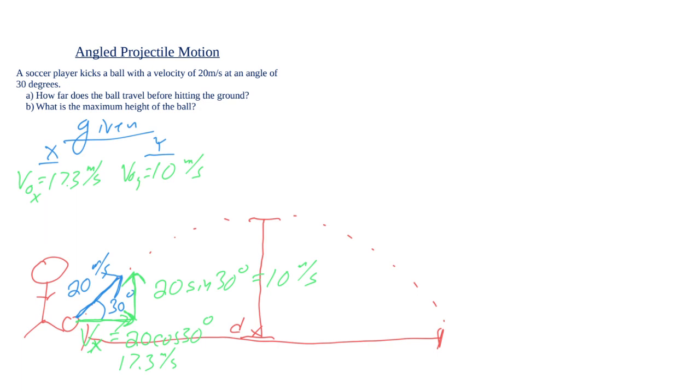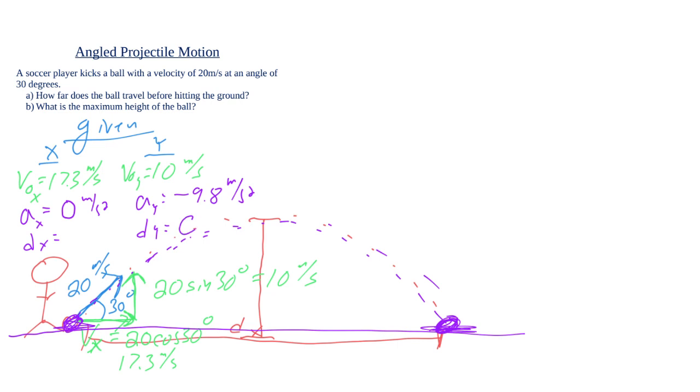That's a major difference between horizontal projectiles and angle projectiles. If we look at the accelerations in the x direction, once the ball's in the air, nothing is speeding it up or slowing it down in the horizontal direction. So that's going to be zero. In the y direction, the only acceleration acting on it is gravity, so that's going to be negative 9.8. The x displacement is what we're looking for. The y displacement, we are going to assume the ball lands at the same height at which it was kicked. So our vertical displacement is going to simply be zero.